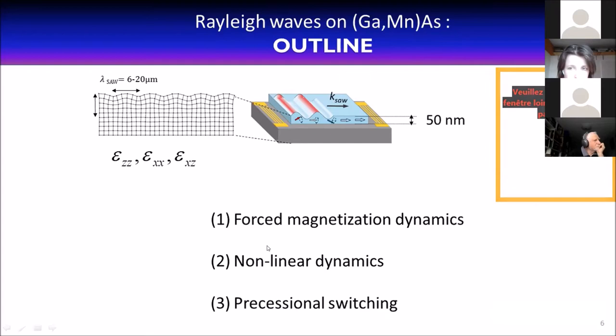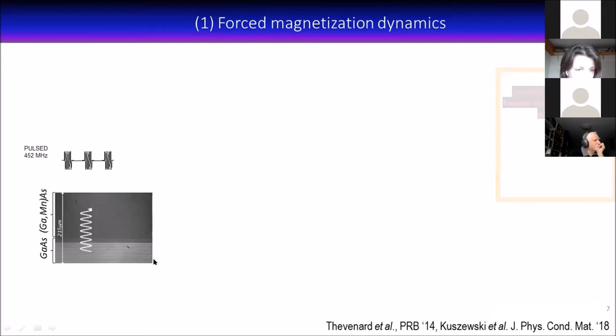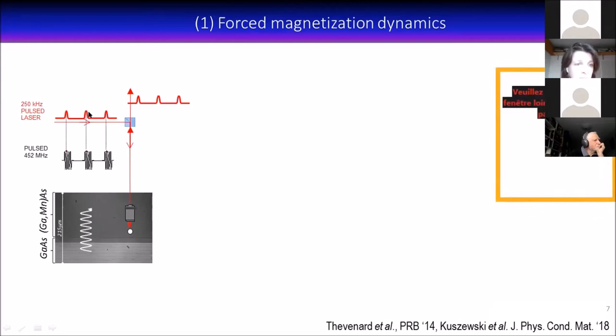Our sample looks something like this. This is a microscopy image. In the bottom third, we have these transducers, and the top two-thirds is the gallium manganese arsenide. I'm exciting here a surface acoustic wave with a pulsed 452 megahertz voltage. This creates a SAW going upwards and downwards. I'm synchronizing this electrical signal with femtosecond optical pulses. These pulses are linearly polarized.